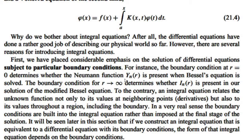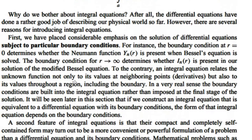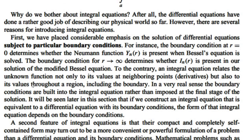The Neumann function's existence is determined by the boundary condition. For the modified Bessel equation, the boundary condition as r tends to infinity determines whether I_n(r) is present in the solution.